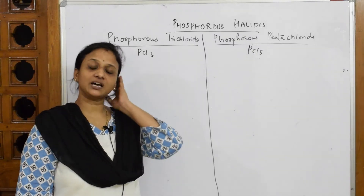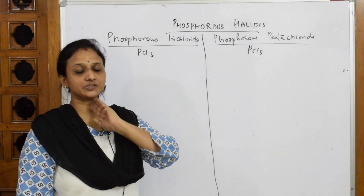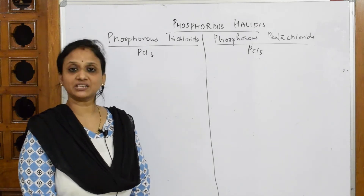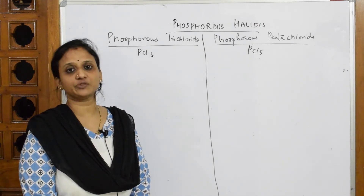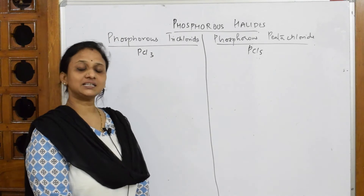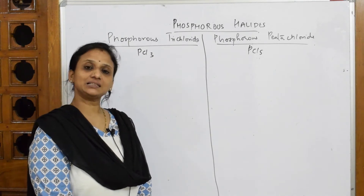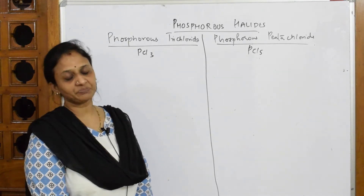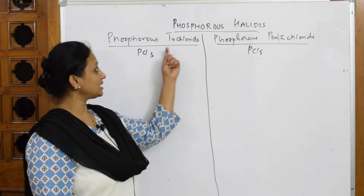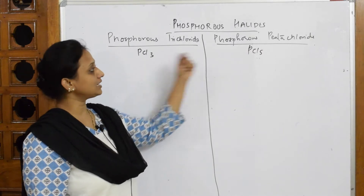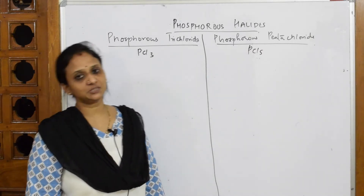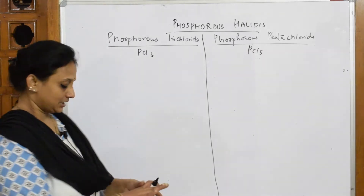Let us come back and start with the halides of phosphorus. Phosphorus forms hydrides of type PH3, that is phosphine. After phosphine, we are going to learn about the halides — that is PCl3 and PCl5. First, let us see the preparations of phosphorus trichloride PCl3 and phosphorus pentachloride PCl5.